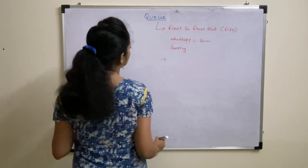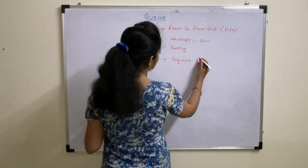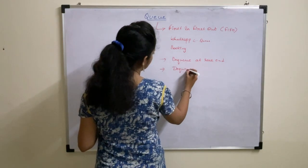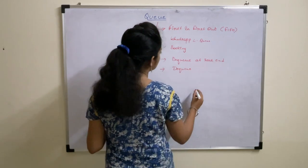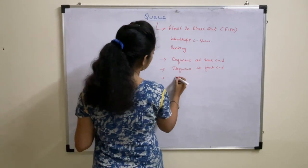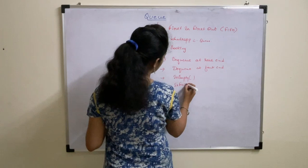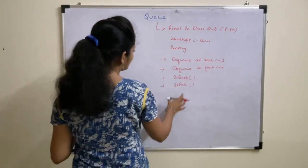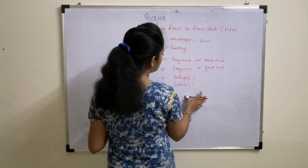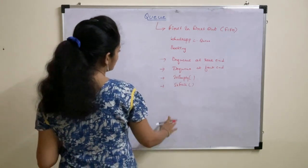Coming to operations, we have operations like EnQ. EnQ is nothing but insertion, and it is done at the rear end. Whereas in order to delete an element, deletion can be done using the operation DeQ, which is done at the front end. Other operations are isEmpty and isFull. isEmpty is used to check whether the Queue is empty or not, because we can't delete anything from the Queue if it is empty. Similarly, isFull — if the Queue is already filled with elements, then we can't insert any elements into the Queue. So these are the four operations.